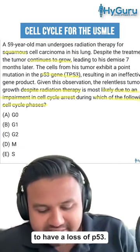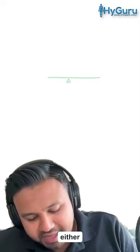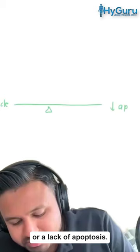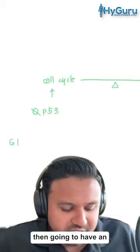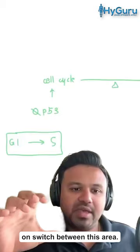This patient is going to have a loss of P53. Just giving you a little bit of background as to how I think about neoplasia: neoplasia is going to be either the cell cycle proliferating too much or a lack of apoptosis. If you are going to have no P53, remember that you are then going to have an unregulated progression from G1 into S phase. P53 normally is going to be an off-on switch between this area.